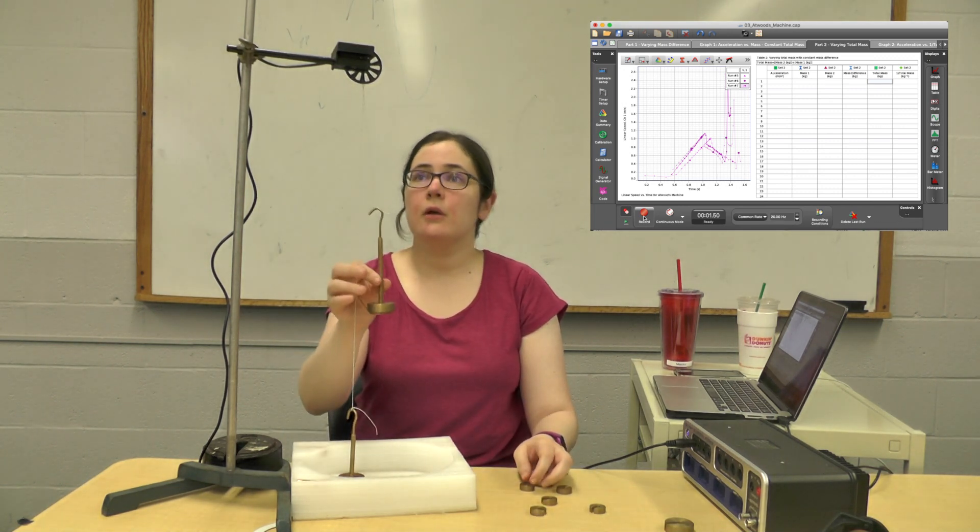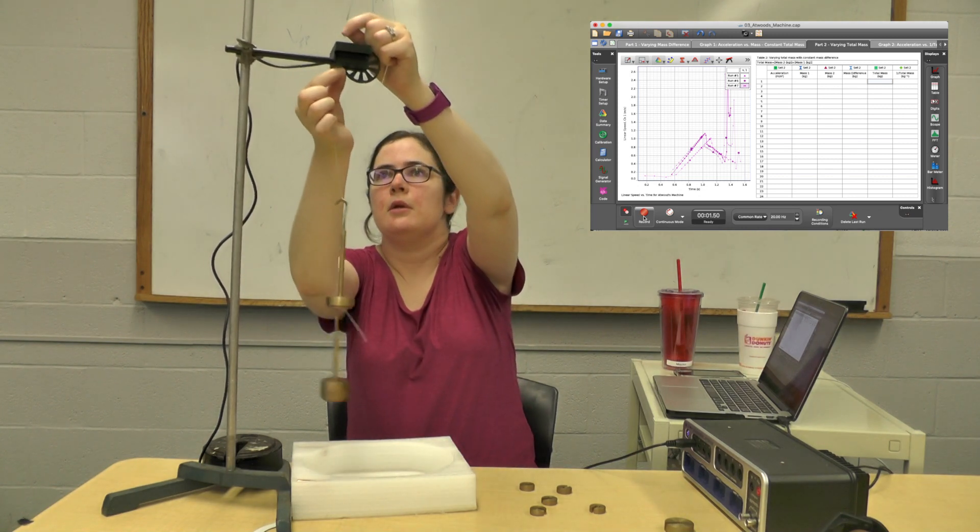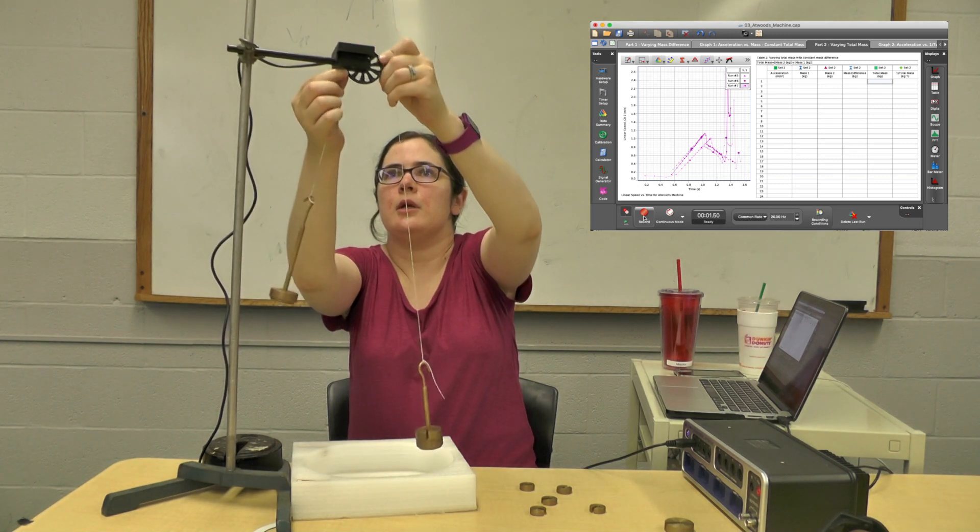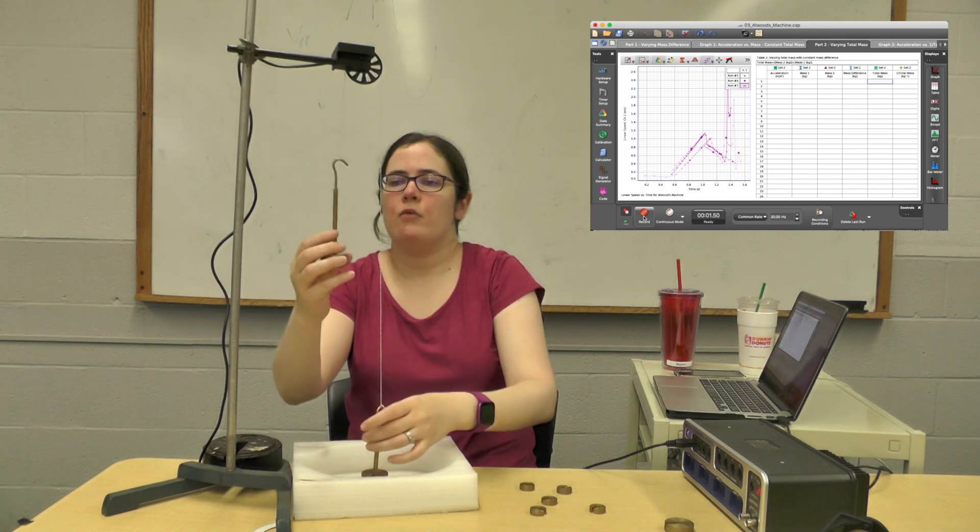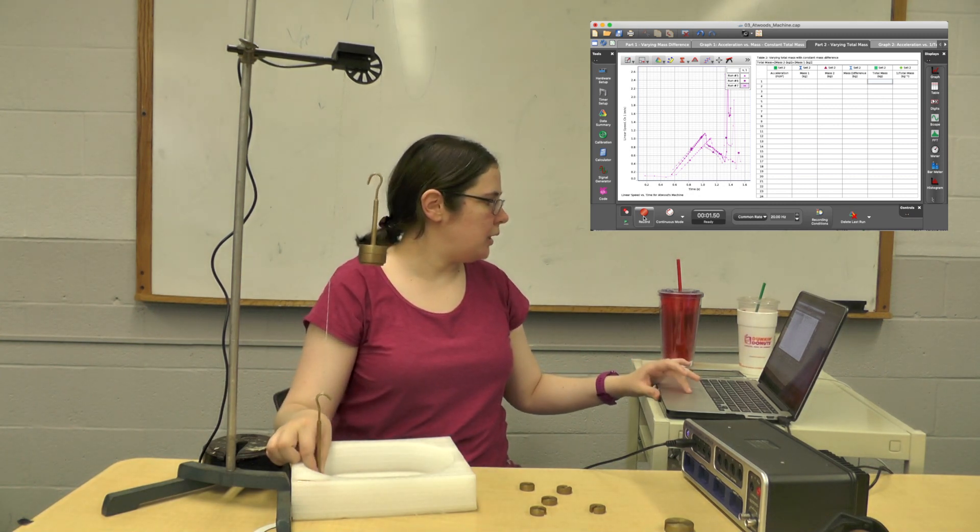All right, so here we still have a mass difference of 100 grams - the heavier one has an extra 100 grams. All right, so now we have 150 on one side and 250 on the other. And let's see what happens to acceleration. Okay, that's run eight. Awesome, great, and it fell off again.